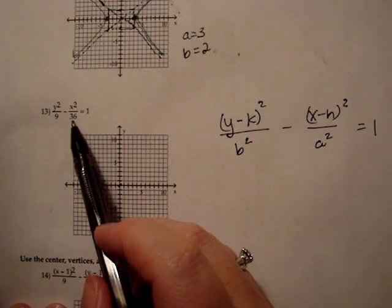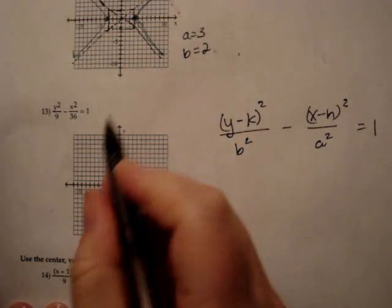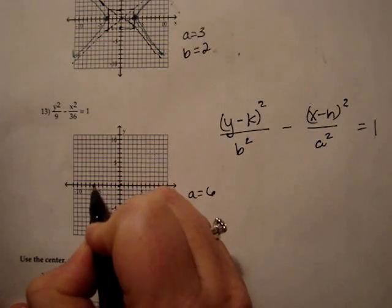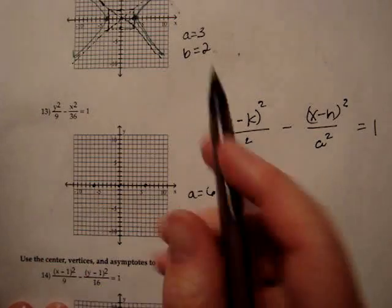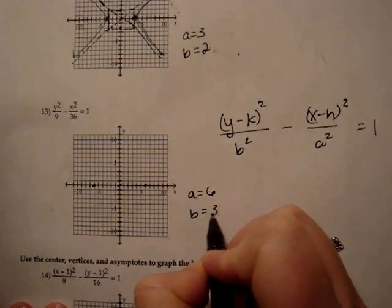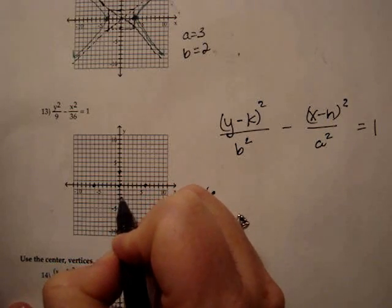The number under the x squared is 36, so a is 6, so I go to the left and right, 6 spaces. The number under the y squared is 9, so b is 3, so I go up 3 and down 3.